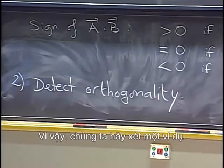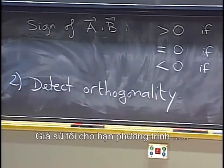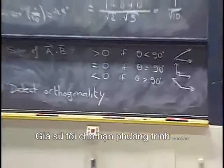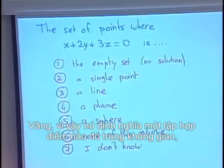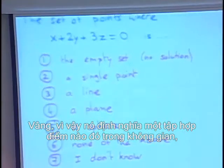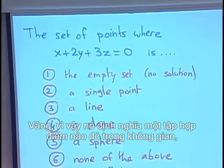Let's just take an example. Let's say I give you the equation x plus 2y plus 3z equals zero. That defines a certain set of points in space.